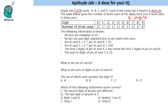Using certain conditions we have to find the PINs of all the cards. The conditions are: all PINs are multiples of 25; no PIN has any digit repeated; no PIN starts with zero; the PIN of card A is two times the PIN of card B plus 25; the PIN of card C is two times the PIN of card D plus 100; the first two digits of the PIN of card A equals two times the first two digits of the PIN of card B; and the sum of digits of the PIN of card C is 15.